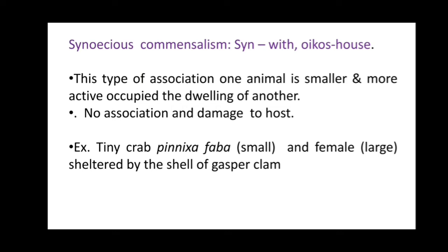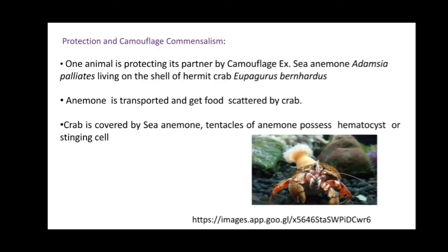Inquilinism — 'sin' means dwelling — is a type of commensalism in which one animal, smaller and more active, occupies the dwelling of another with no damage to the host. Example: tiny crab Pinnotheres — the male is small and the female is large — sheltered by the shell of a clam. In protection and camouflage commensalism, one animal protects its partner — for example, sea anemone Calliactis living on the shell of a hermit crab.